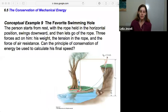All right. One more example. This one's a conceptual one. The favorite swimming hole. The person starts from rest with the rope held in the horizontal position, swings downward, and then lets go of the rope. Three forces act on him. His weight, the tension of the rope, and the forces of air resistance. Can the principle of conservation of energy be used to calculate his final speed? So I would like you to think about this. Think about the reasoning behind your answer of yes or no and settle on that before you move on.